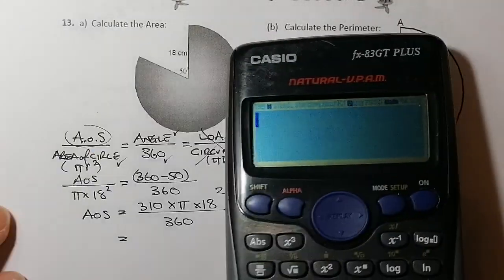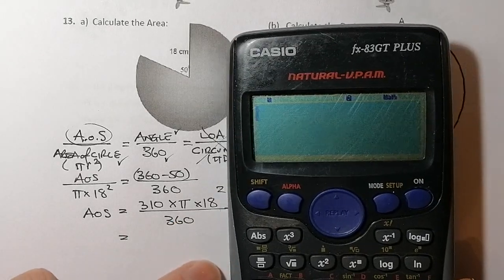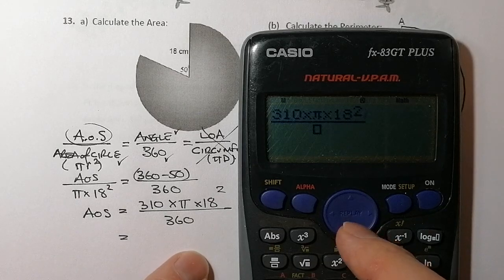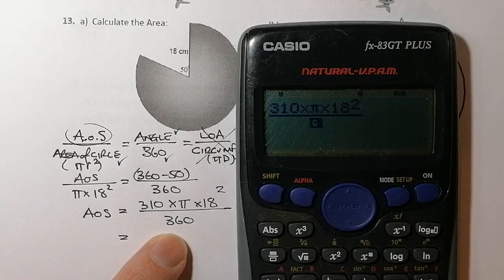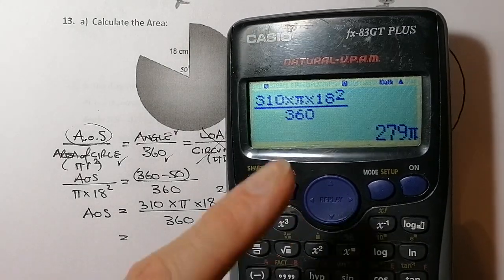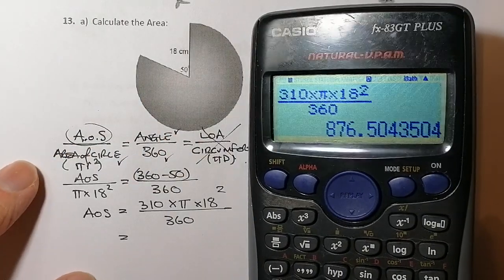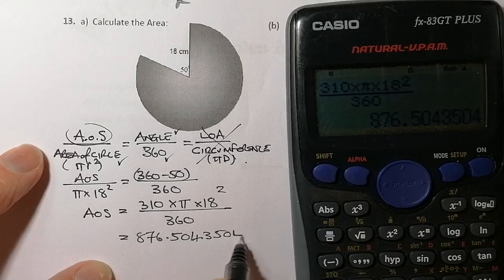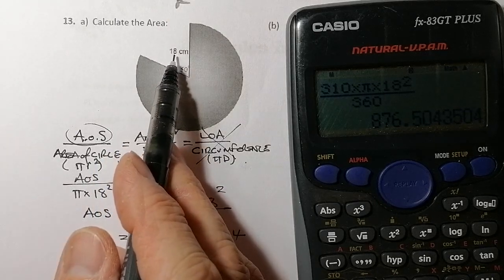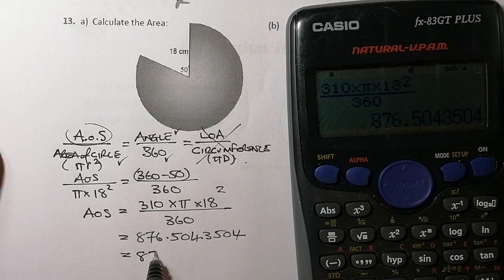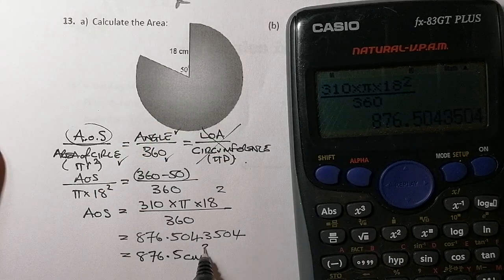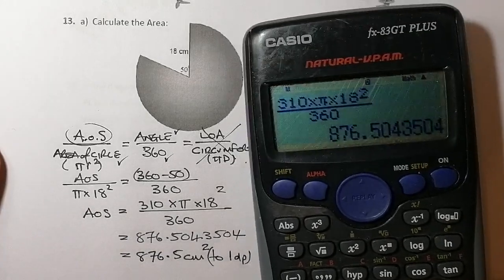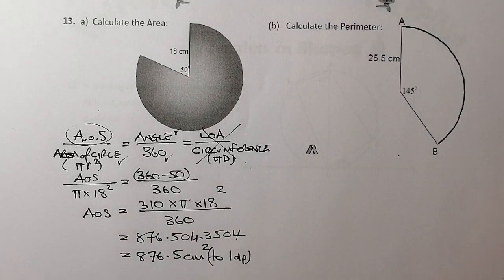I'll use the fraction button on the calculator. I enter 310 times pi times 18 squared on the top, and 360 on the bottom. Pressing equals and then the SD button gives me 876.5043504. Rounding to one decimal place, the area of the sector is 876.5 square centimetres.